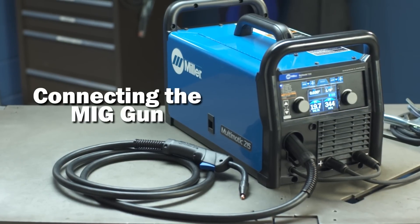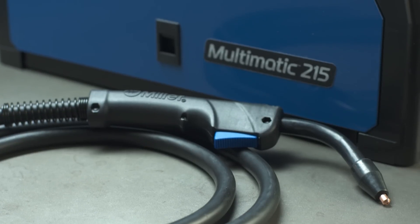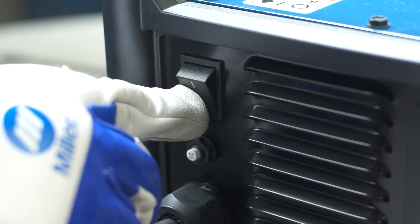The standard MIG gun provided with your Multimatic 215 is designed to run flux cord wire. To connect the gun, first make sure your machine is powered off.